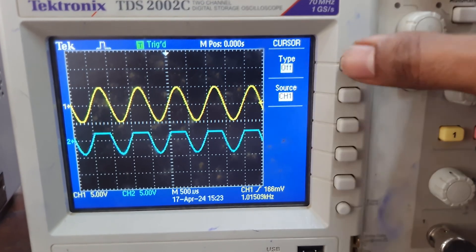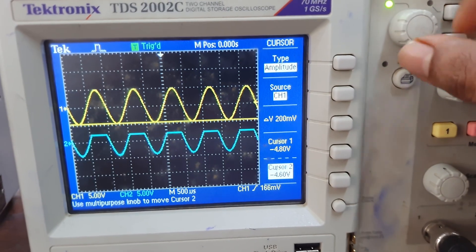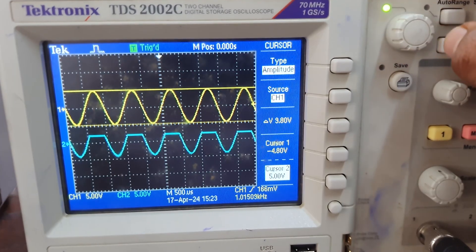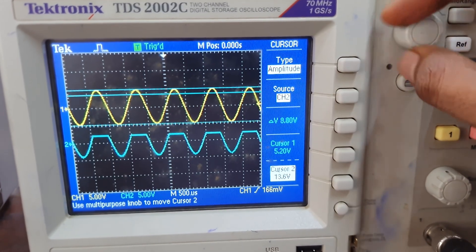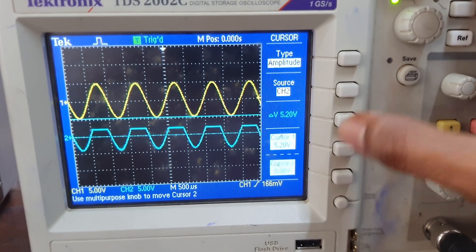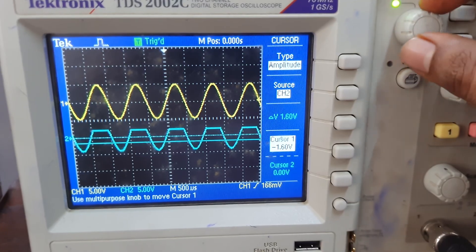For a positive series clipper, it removes all the positive parts of the input waveform. But here you can see at the output, a small portion of the input is available because we already gave a positive bias voltage of 2 volts.